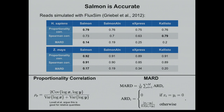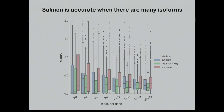It's also accurate when there are many isoforms. If you segregate genes by how many isoforms they have and look at mean absolute relative difference — where lower is better — Salmon maintains good accuracy even when there are a large number of isoforms.